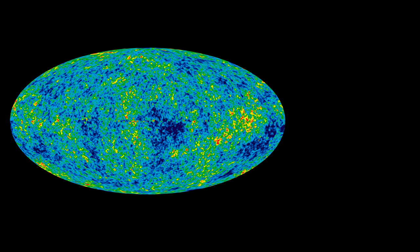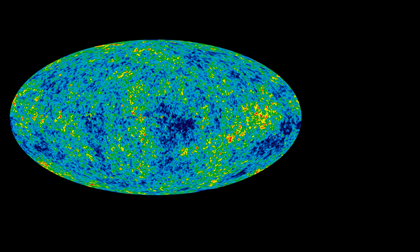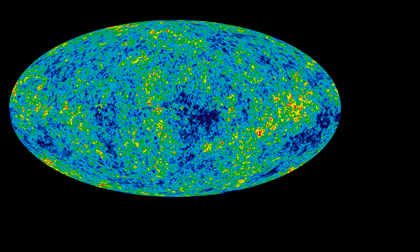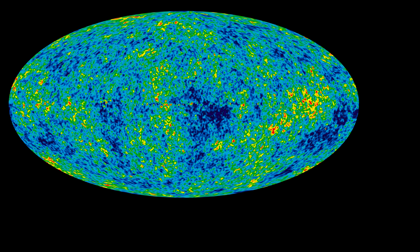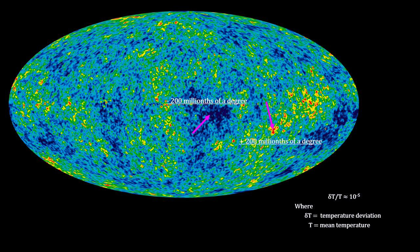The Planck satellite measurements detected small amounts of temperature deviation. The image uses color to show variations from the average — blue for minus 200 millionths of a degree, through green and yellow to red, which represents plus 200 millionths of a degree. That temperature deviation comes to one part in 100,000.